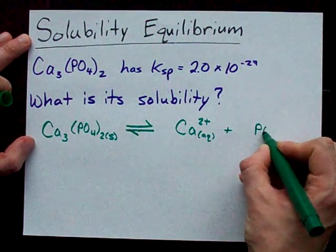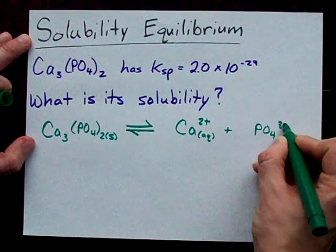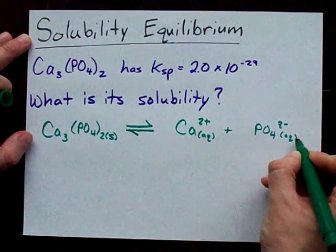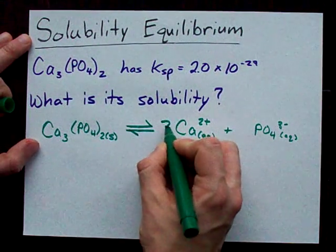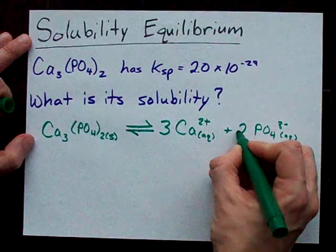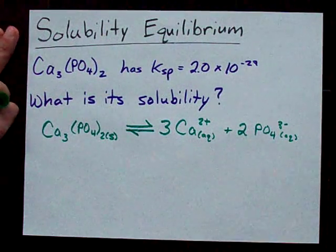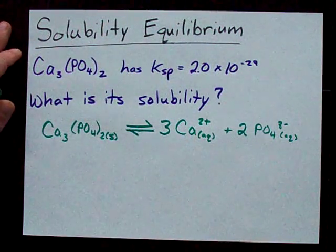Phosphate ions, PO4s, have a charge of minus 3. They're also aqueous. But the deal is that we have 3 calciums and 2 phosphates. So this is my balanced chemical equation for the dissolving of calcium phosphate.